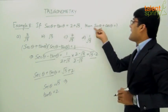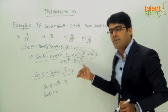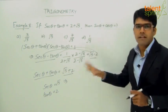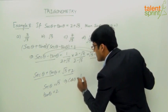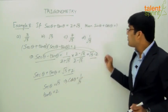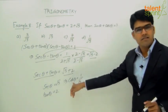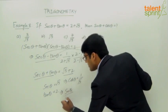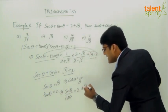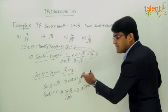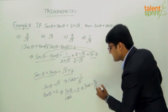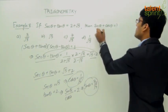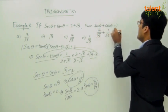Since secant theta equals root 5, we get cos theta equals 1 by root 5. To find sin theta, we use tan theta equals sin theta by cos theta equals 2, so sin theta equals 2 times cos theta equals 2 times 1 by root 5 equals 2 by root 5. Therefore sin theta plus cos theta equals 2 by root 5 plus 1 by root 5, which equals 3 by root 5.